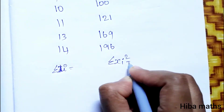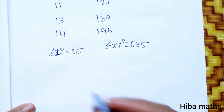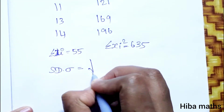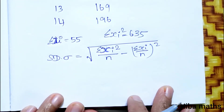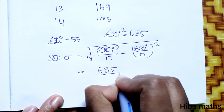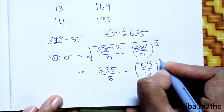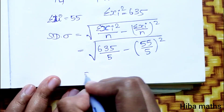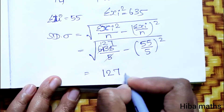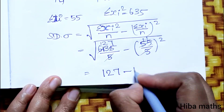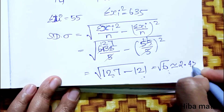The summation of Xi is 55 and summation of Xi² is 635. Standard deviation equals root of summation of Xi² divided by N minus summation of Xi by N whole square. Substituting: root of 635 by 5 minus 55 by 5 whole square, which gives root of 127 minus 121, that is root 6, approximately 2.45.